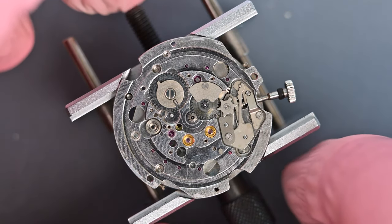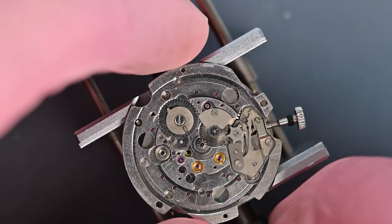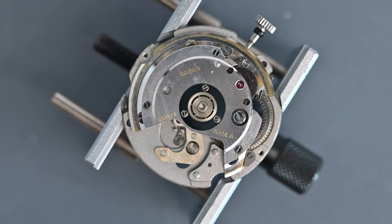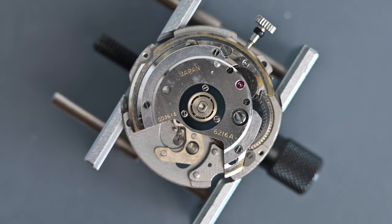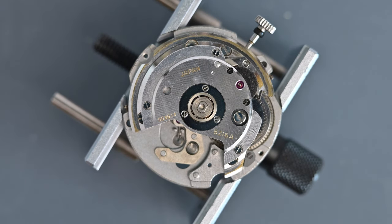Let's turn the movement over and take a look at the train side. We've got the movement model number 6216A. So this is the first edition of this high-end Seiko automatic movement. We can see a serial number on the movement, which you don't generally see on Seiko movements.